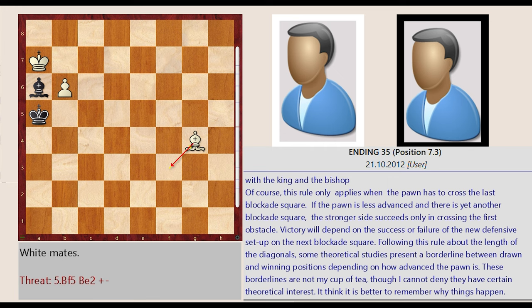Following this rule about the length of the diagonals, some theoretical studies present a borderline between drawn and winning positions depending on how advanced the pawn is. These borderlines are not my cup of tea, though I cannot deny they have certain theoretical interest. I think it is better to remember why things happen.